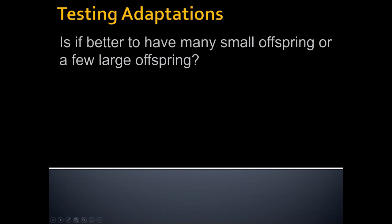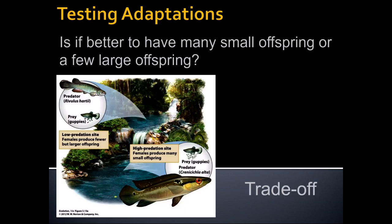We can test adaptations to determine whether or not they truly provide advantages for a certain environment. In ecology, there are basically two extreme strategies for reproduction. A strategy where you have very few babies and put lots of resources into each individual baby is called an R strategy. Humans are an extreme example — we put lots of resources into individual offspring.